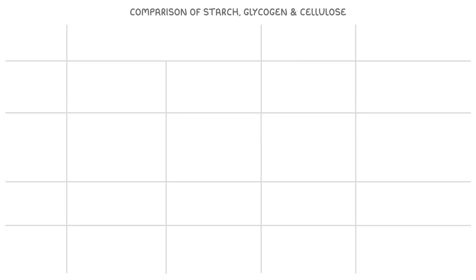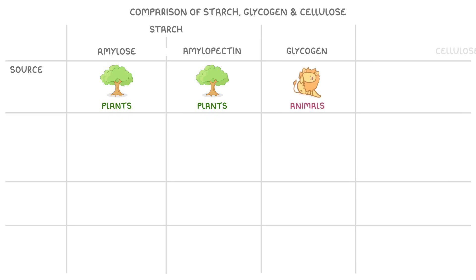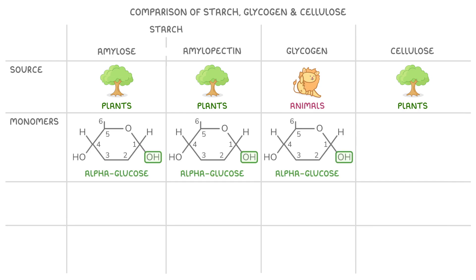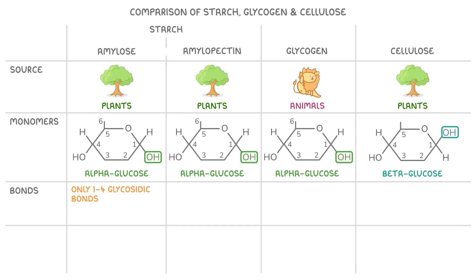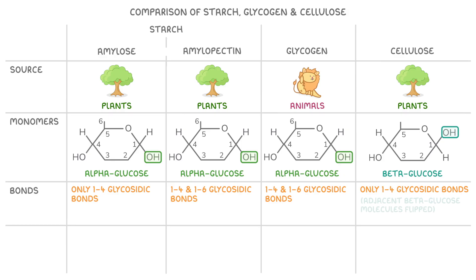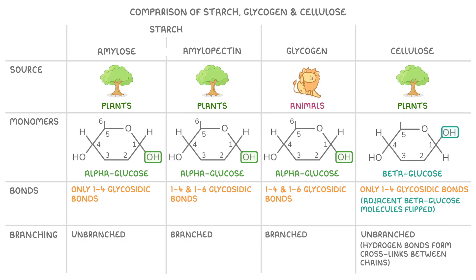Let's do a quick comparison of starch, glycogen and cellulose. In terms of source, starch — both amylose and amylopectin — is found in plants; glycogen is found in animals; and cellulose is found in plants. For monomers, both types of starch and glycogen are made from alpha-glucose, whereas cellulose is made from beta-glucose. Regarding bonds, amylose has only 1,4-glycosidic bonds, whilst amylopectin and glycogen have both 1,4 and 1,6-glycosidic bonds. Cellulose has only 1,4-glycosidic bonds, but adjacent beta-glucose molecules are flipped upside down relative to each other. Finally, for branching: amylose is unbranched; amylopectin and glycogen are branched; but cellulose is unbranched, with hydrogen bonds forming crosslinks between its chains.